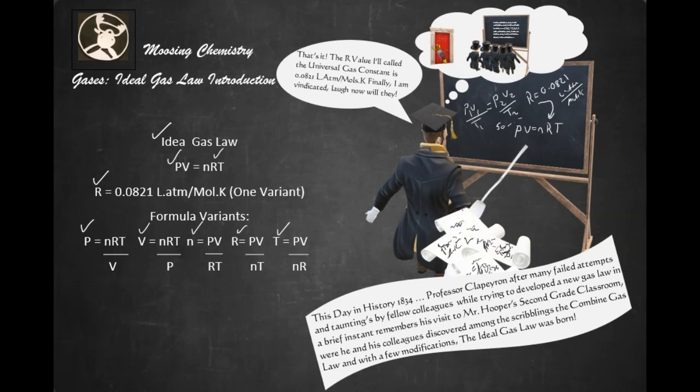Now, one thing you need to remember is that the ideal gas law was derived from the combined gas law. We don't really know the origin of the combined gas law, but what we do know is that the combined gas law is P1 V1 over T1, which equals P2 V2 over T2.